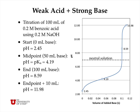Here's a detailed calculation of the pH changes during an acid-base titration. For simplicity, I've used 100 milliliters of 0.2 molar benzoic acid titrated using 0.2 moles per liter sodium hydroxide. At the beginning of the titration the pH is 2.45, and this gradually increases. At the midpoint of the titration, where we've added half the required amount of base to reach the endpoint, the pH is equal to the pKa, which is 4.19.